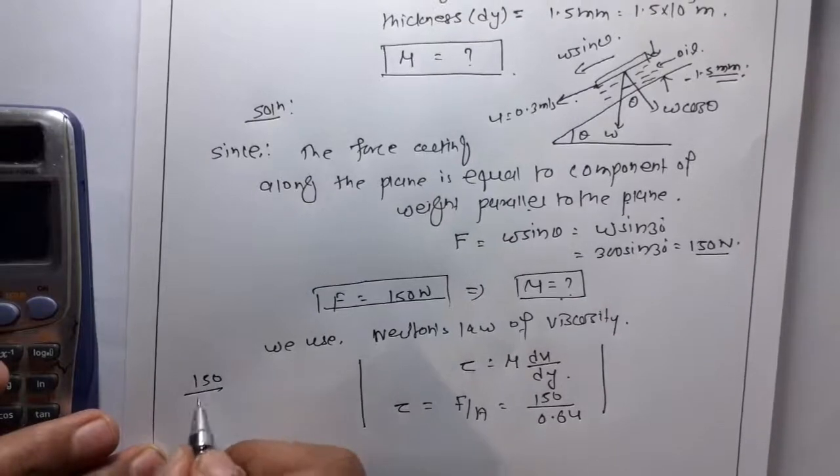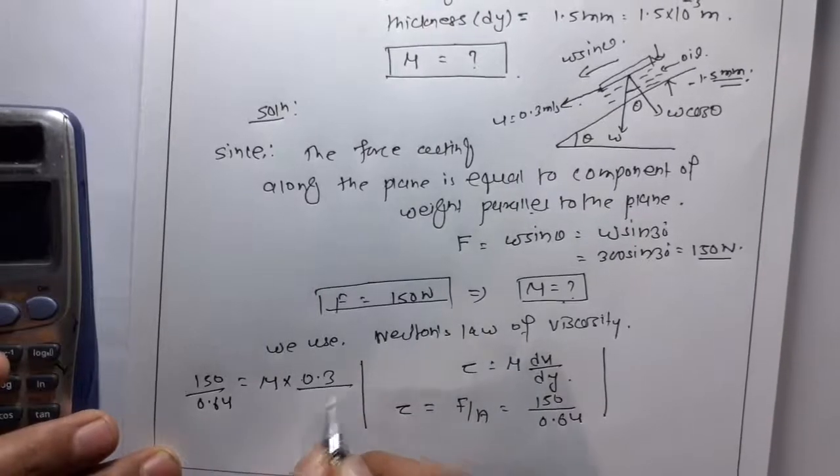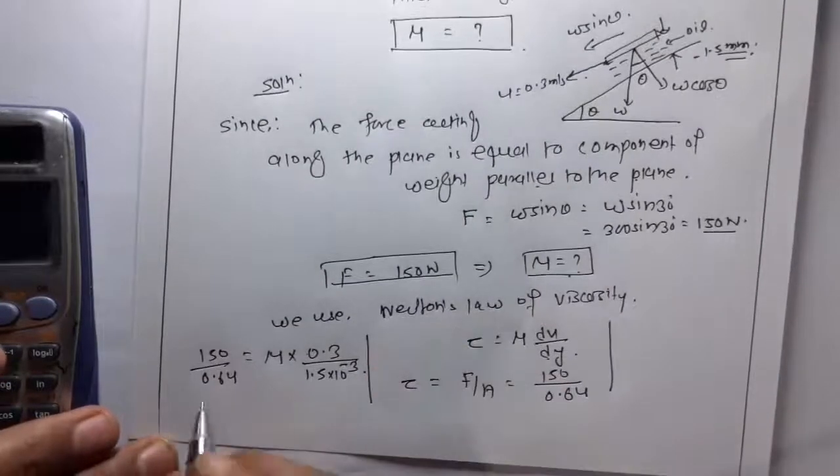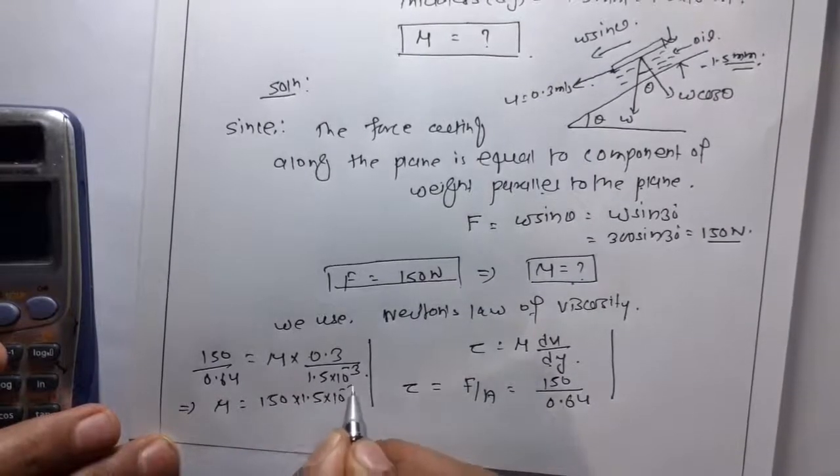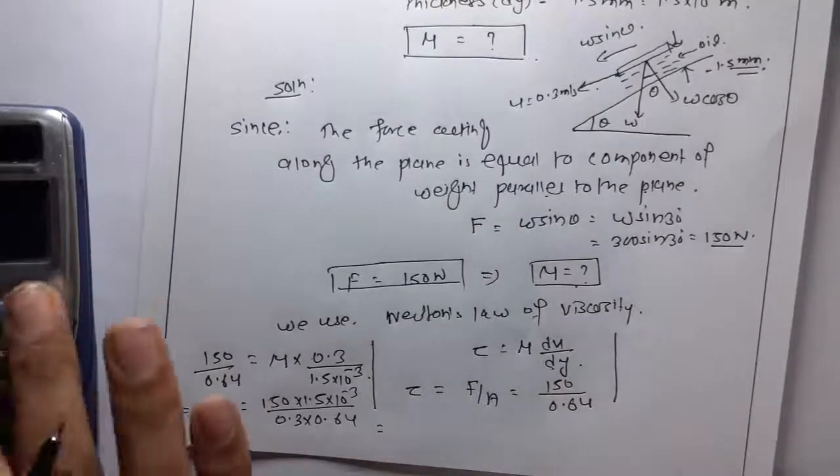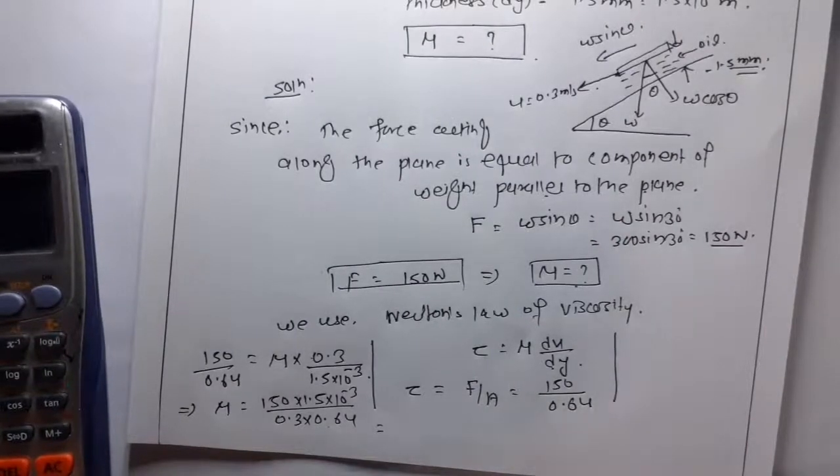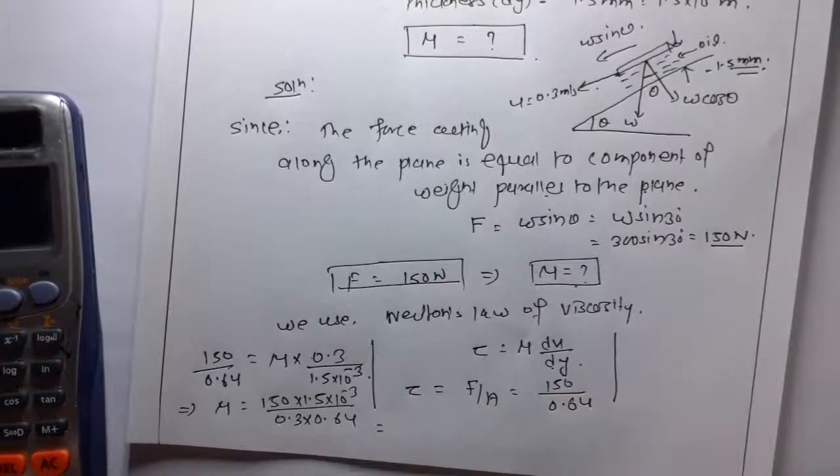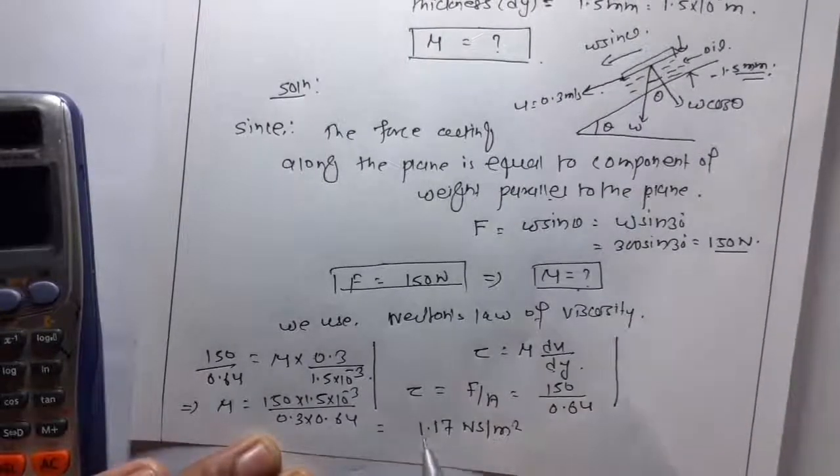150 upon 0.64 is equal to mu times du is 0.3 upon dy is 1.5 times 10 to the power minus 3. This implies mu is equal to 150 times 1.5 times 10 to the power minus 3 upon 0.3 times 0.64. So this is 1.17 Newton second per meter square.